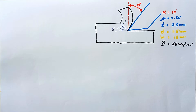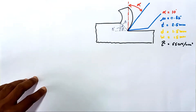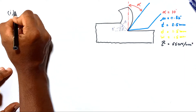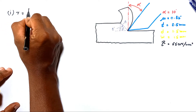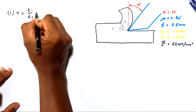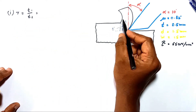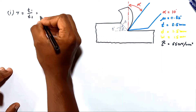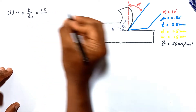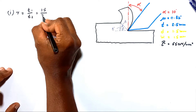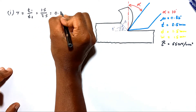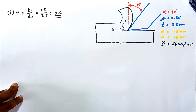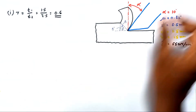First, we determine the chip thickness ratio r. The formula is r = t1 / t2, where t1 is the depth of cut and t2 is the chip thickness. Depth of cut is 1.5 mm and chip thickness is 2.5 mm, so r = 1.5 / 2.5 = 0.6. That is the answer for the first part.